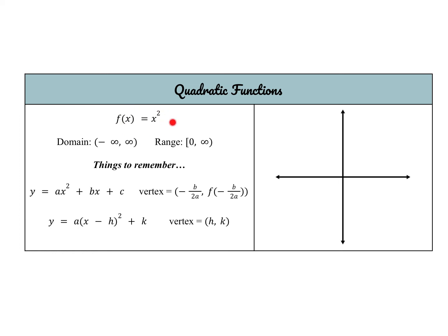For quadratic functions, the parent function is y equals x squared — that u-shaped parabola with vertex at the origin. The domain is all real numbers, but the range is 0 to infinity because squaring any number gives a non-negative result. The function is sometimes written as ax squared plus bx plus c, where the vertex x-coordinate is negative b over 2a. It can also be written in vertex form: a times (x minus h) squared plus k, with vertex at (h, k).